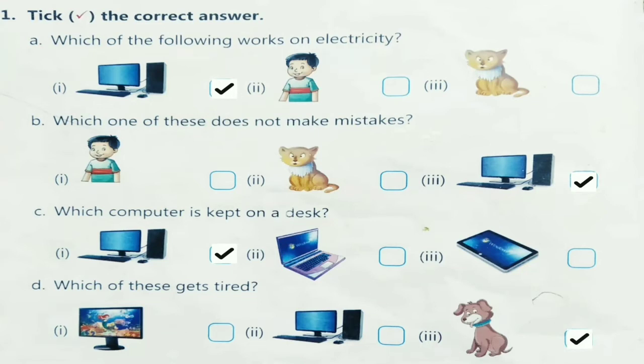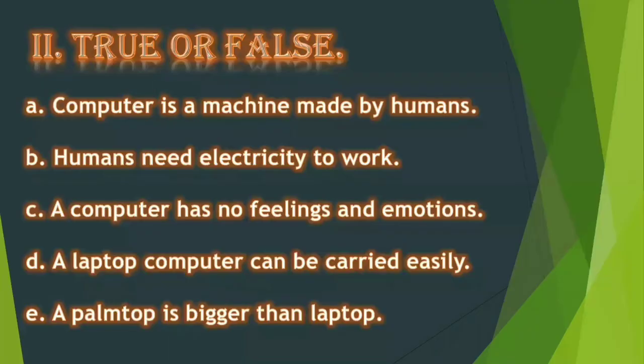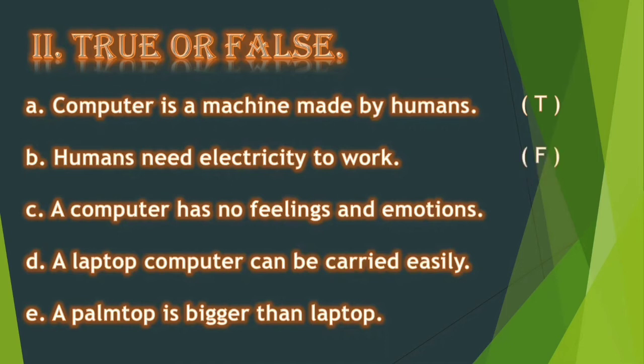Moving on to the next exercise: true or false. Let's see the first one. Computer is a machine made by humans — is it true or false? It is true, because all machines are man-made. The next one: humans need electricity to work. Does a human need electricity to work? No. So it is false.